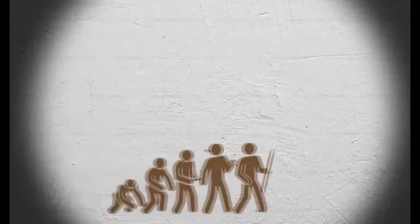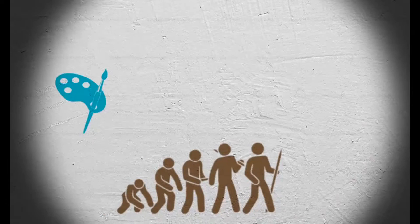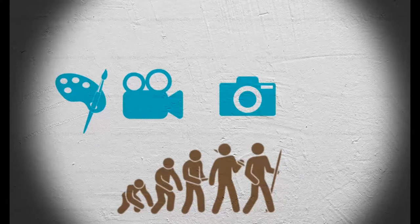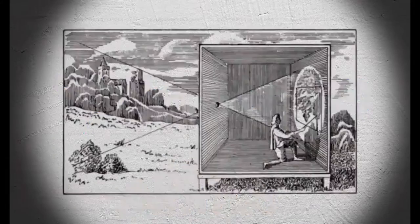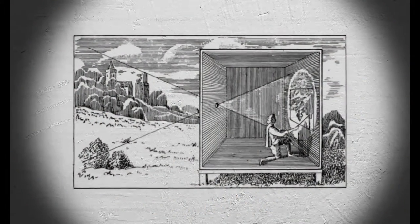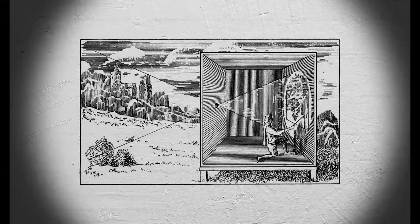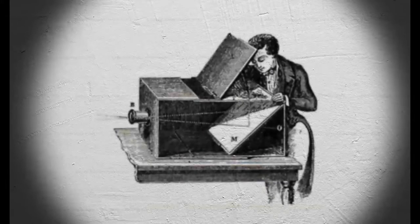Since the beginning of time, men have tried to transform and project reality in different ways, first passing from 3D to 2D, and then doing the inverse procedure. From this concept, the camera obscura was born. This was the first time in which men had started to use projections, particularly for making paintings and afterwards pictures.